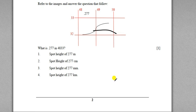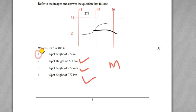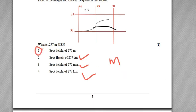The third question uses the same image but asks: what does the number 277 along with the dot given in grid square 4833 indicate? We know it is a spot height, but look at the answers — all are given in different units. There is nothing to be confused about. We all know that all heights given in the topographic map we are studying are in meters. So we can eliminate centimeter, millimeter, and kilometer. The answer is the spot height of 277 meters.